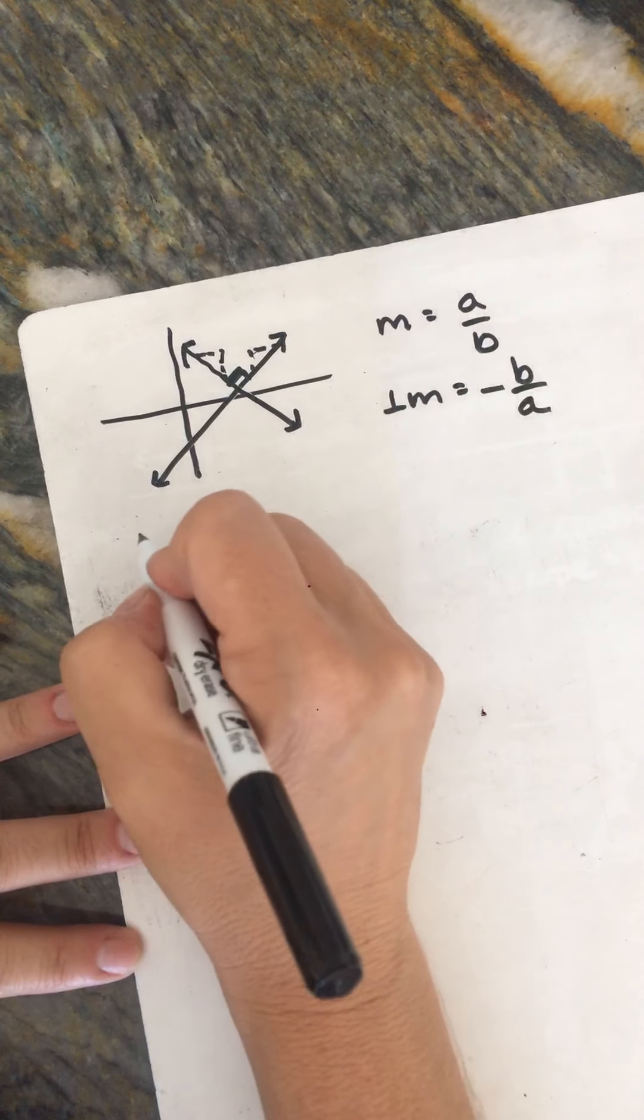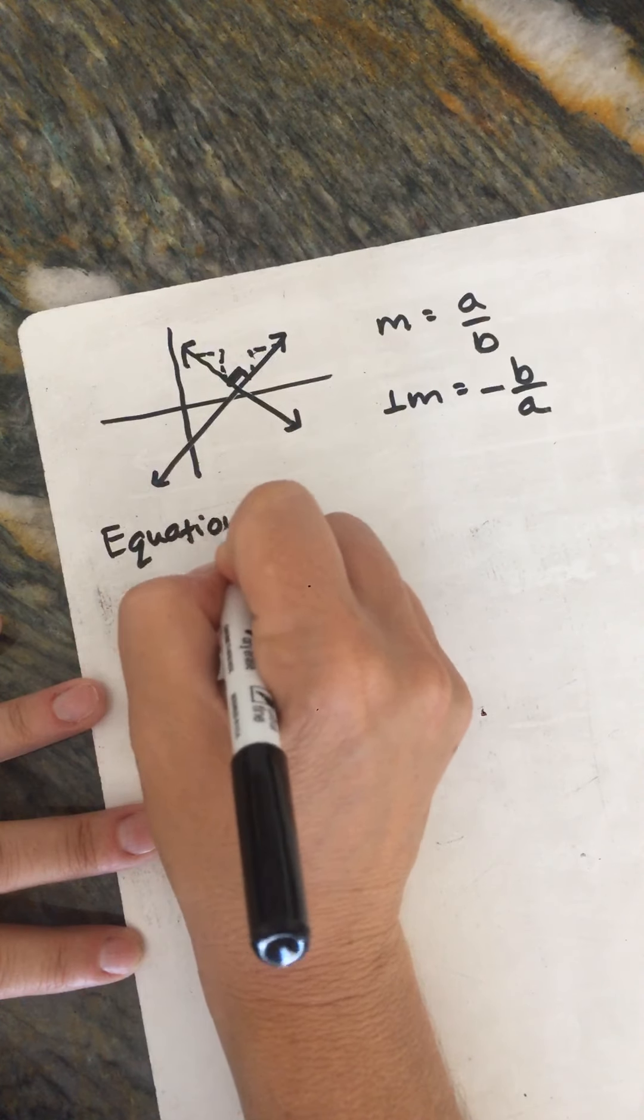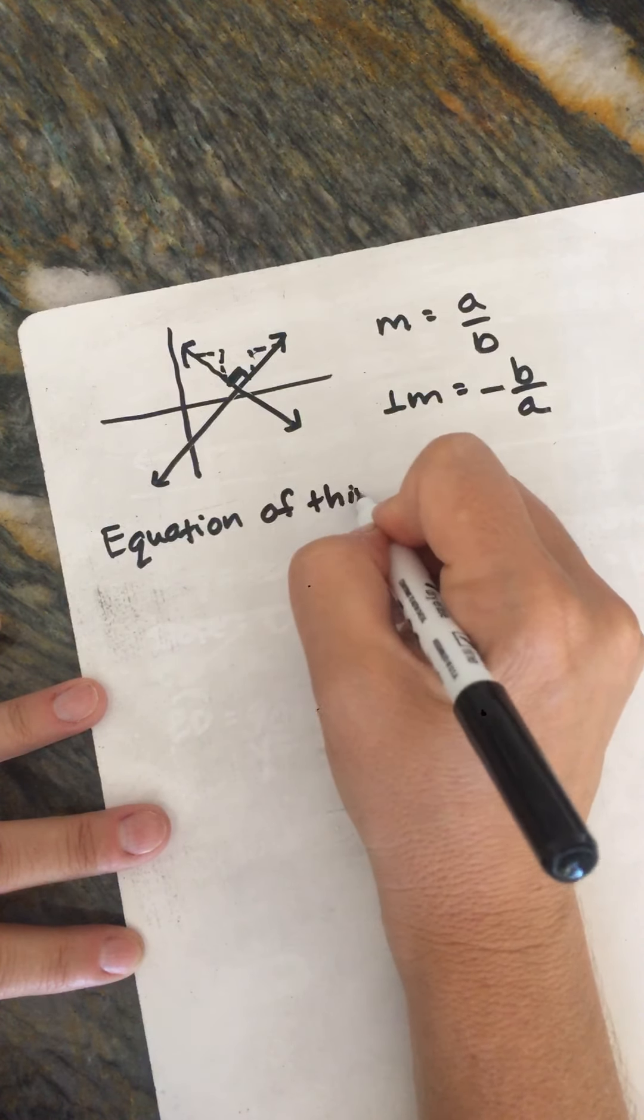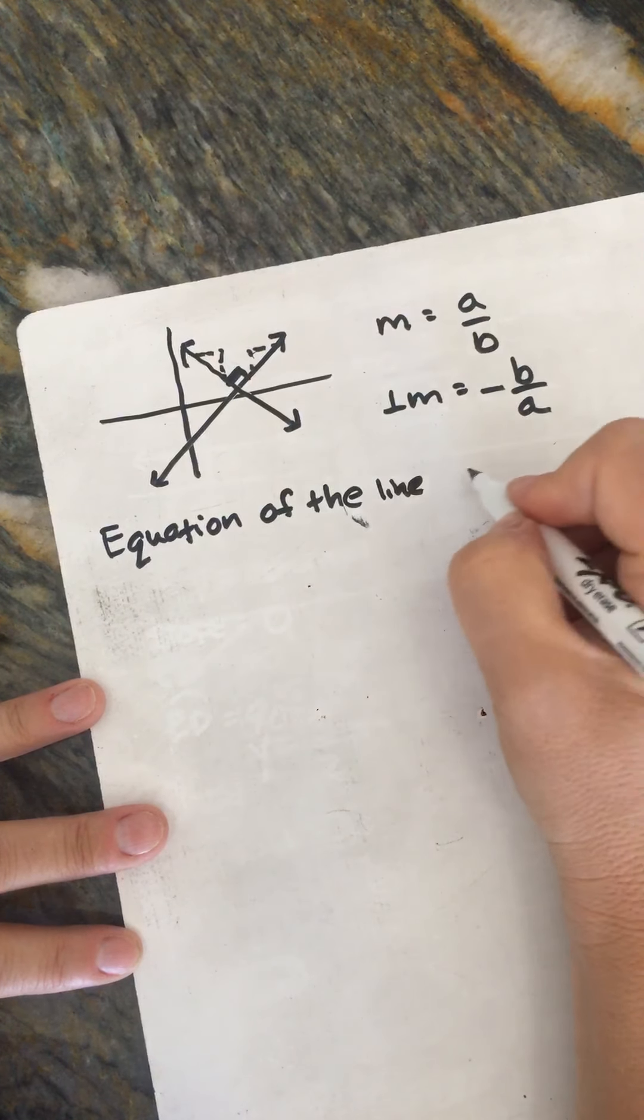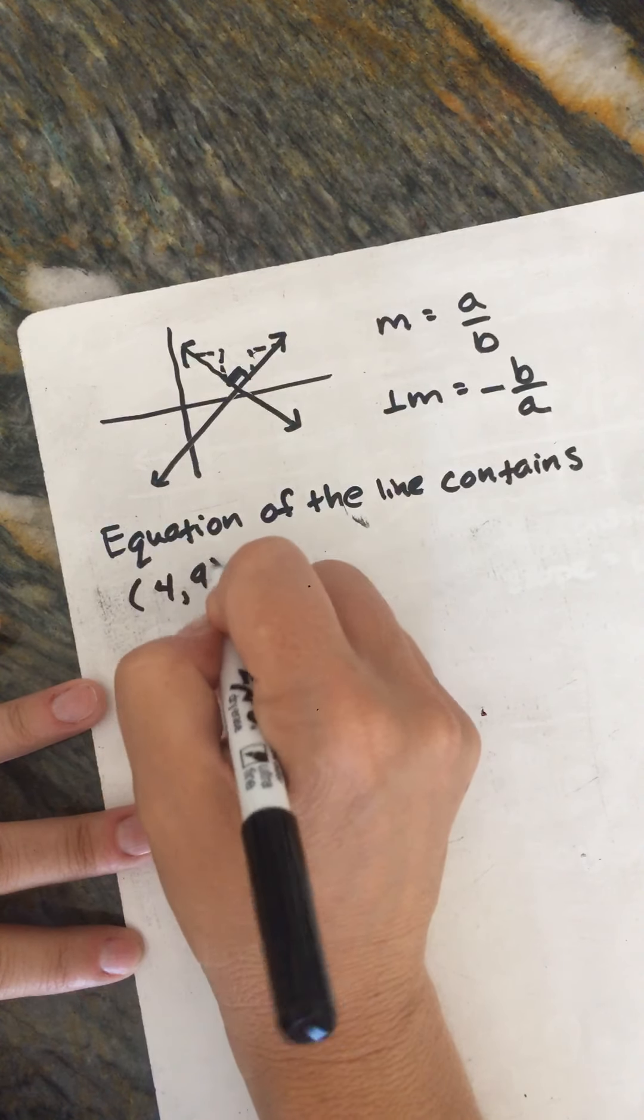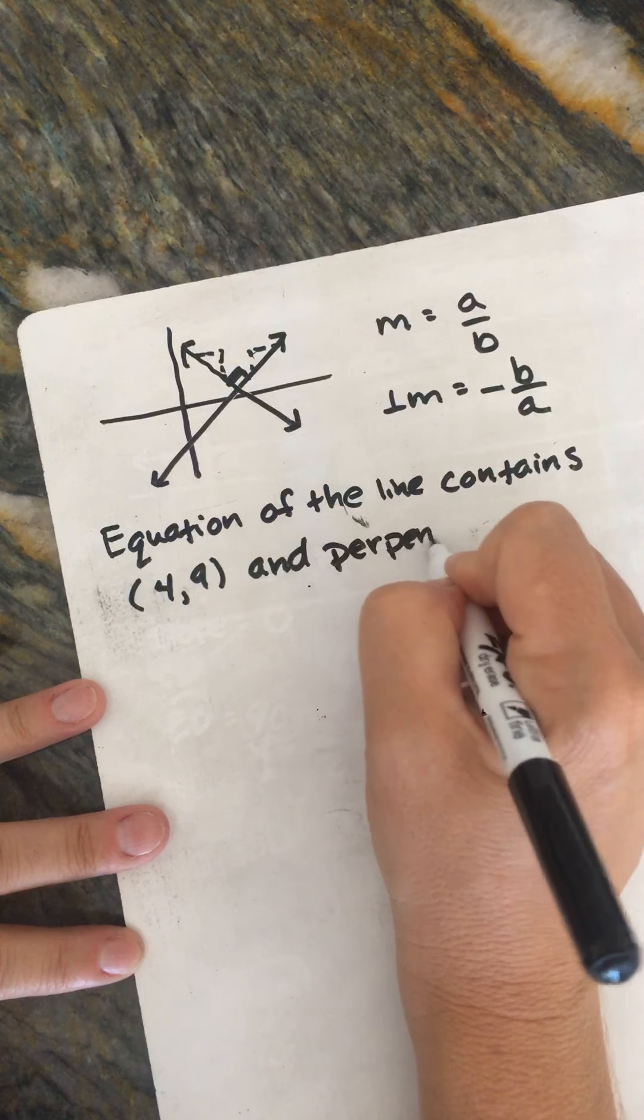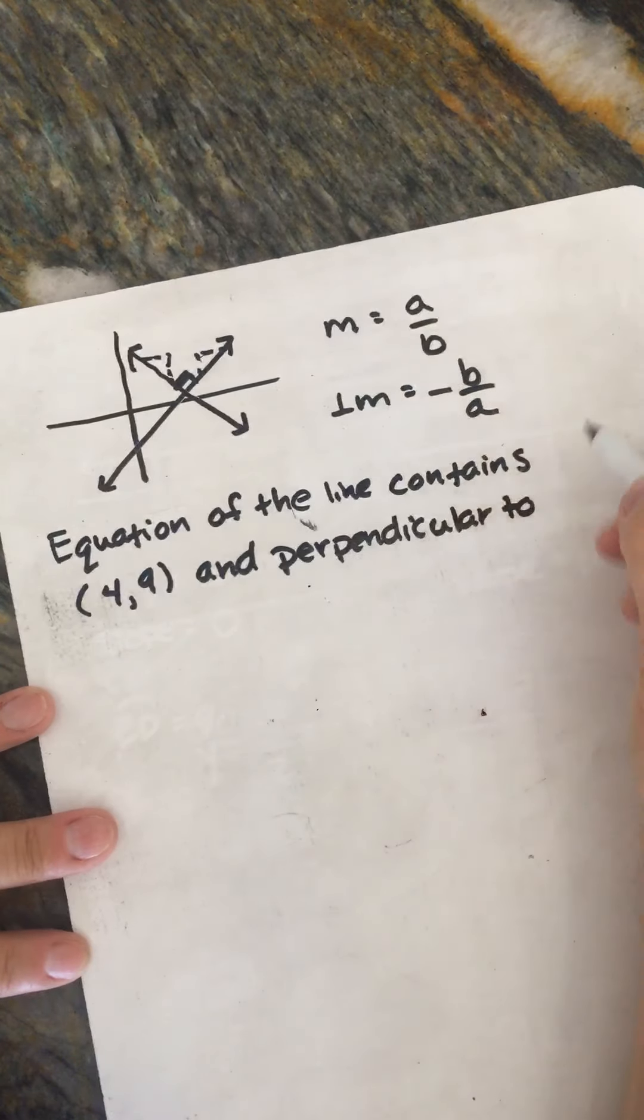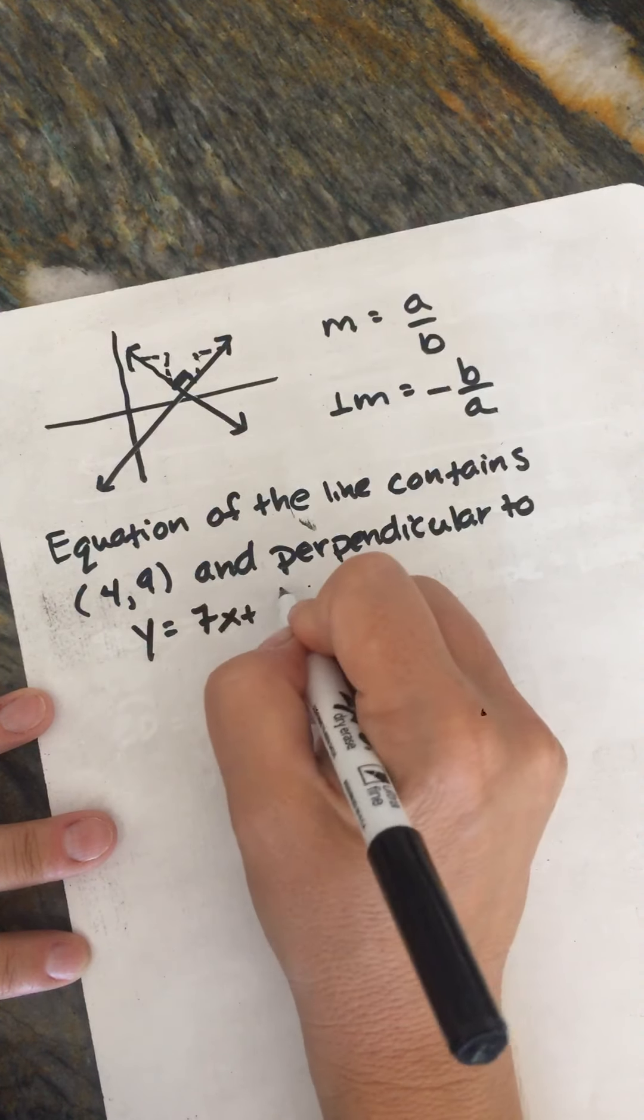So let's write the equation of the line that contains the point, we'll do (4, 9), and perpendicular to y = 7x + 3/8.